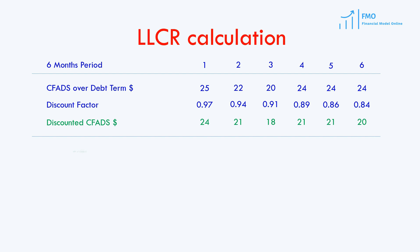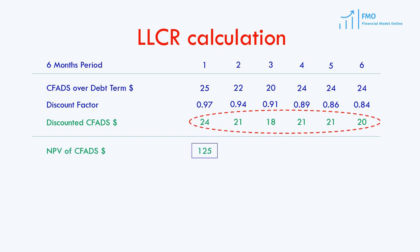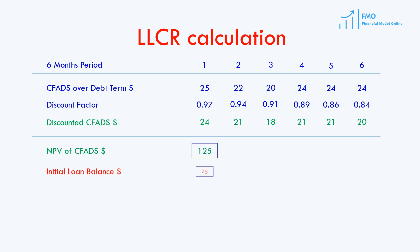Then we have to sum up all our discounted CFADs to come up with a net present value of CFADs. The present value of the debt service is the same as the initial loan balance at a 3% discount rate. The project's LLCR is the net present value of CFADs divided by the initial loan balance, which equals 1.67.